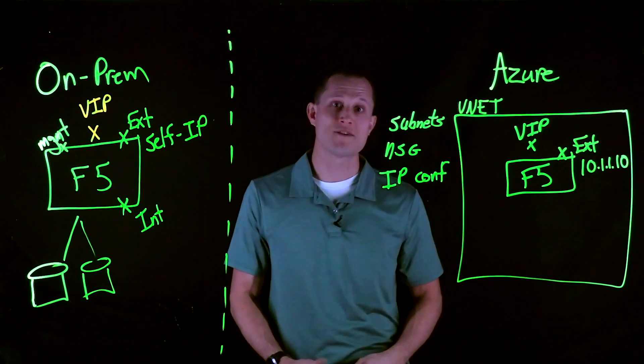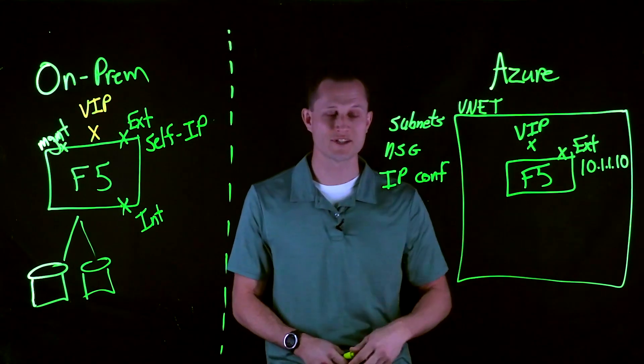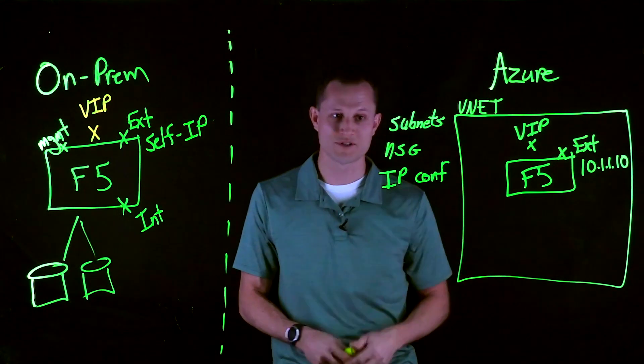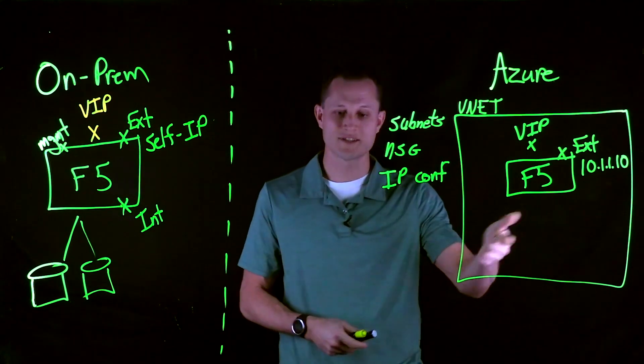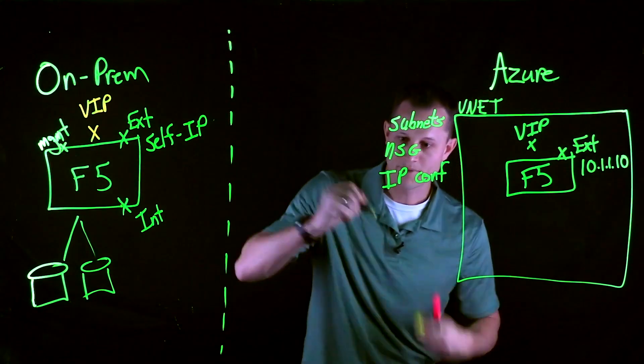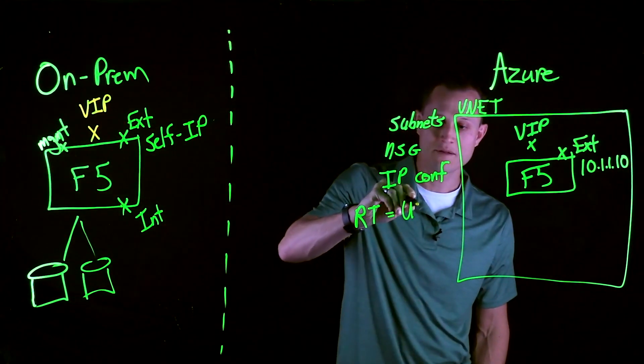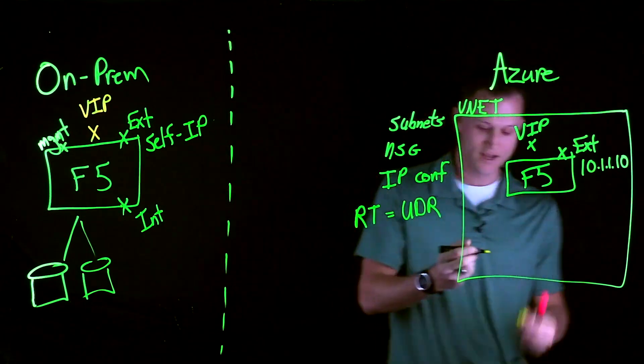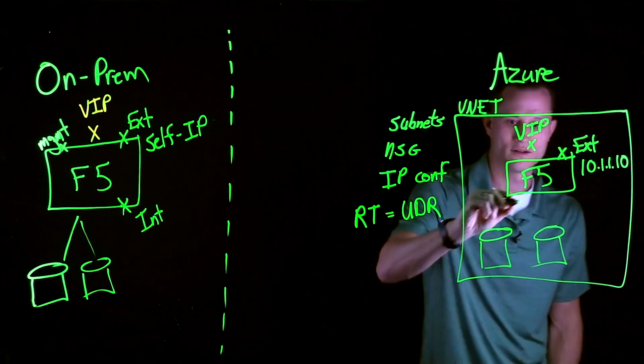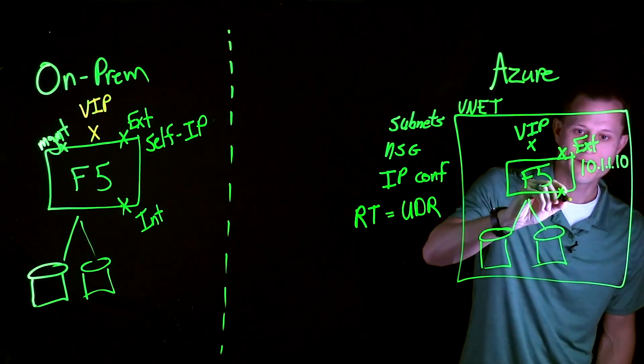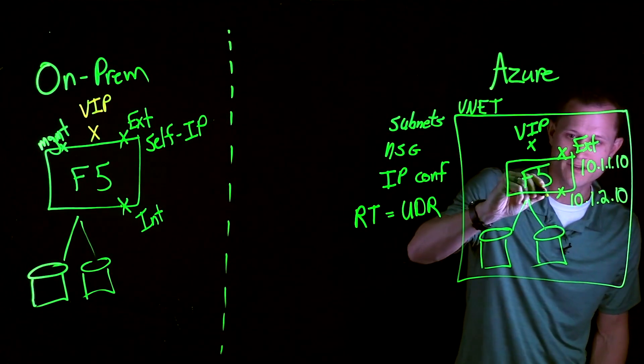All right, so next we're going to talk about route tables and UDRs and this is very important in case server subnets, for example, want to route directly to a network virtual appliance. If you recall, the subnets within the VNet have default routing and default system routing to use the Azure cloud gateway. So let's draw up RT for route table and what you put inside of that are things called user-defined routes. If we draw up some servers over here and we'll give the F5 another interface, 10.1.2.10, we'll call this internal.